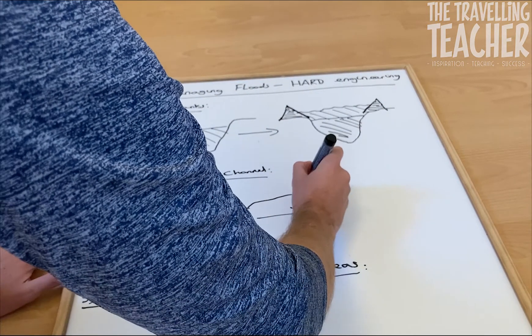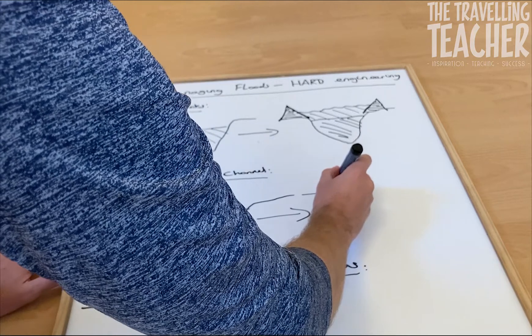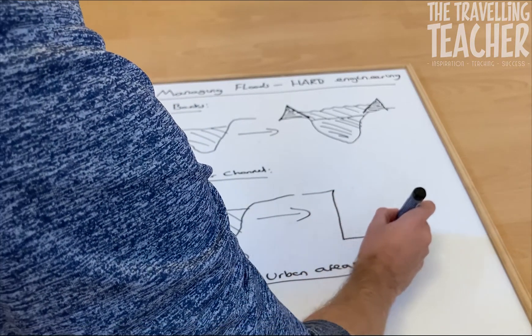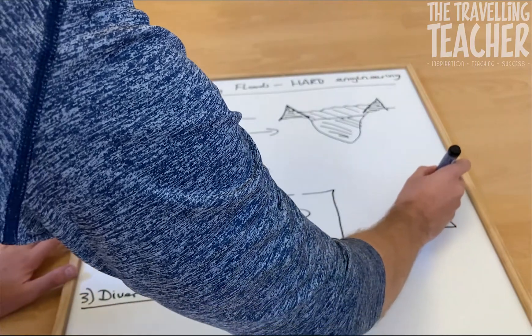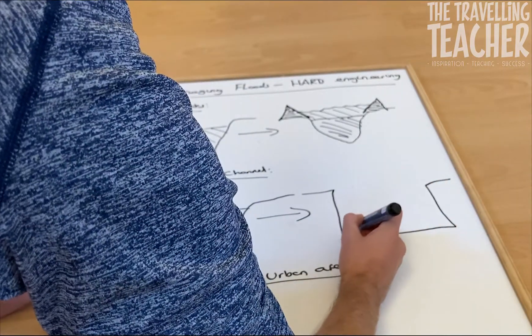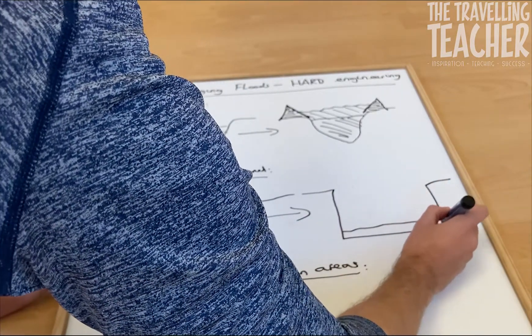The solution is we want to do the opposite. We want to make our river much deeper, much wider. There it is. And there is our water level.